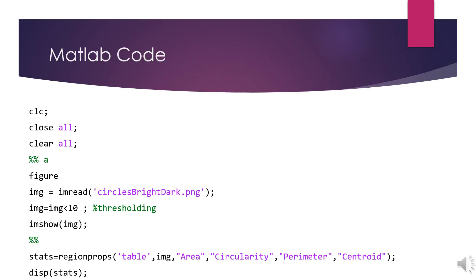Here in this MATLAB program, circles bright dark is the input image. Initially we will apply thresholding operation on the image with the threshold value as 10. Region props is a function to find out the region properties. The function parameters are the properties to be calculated.